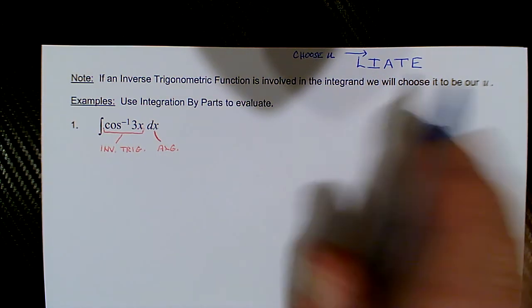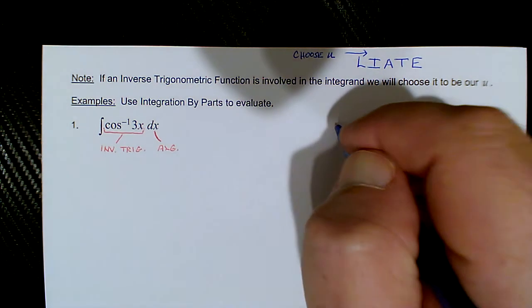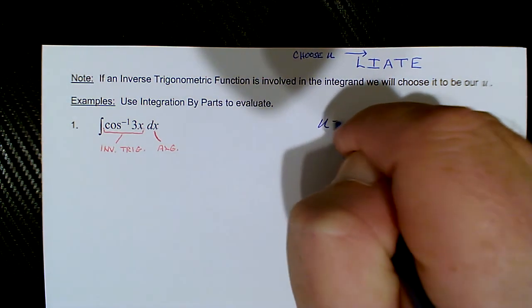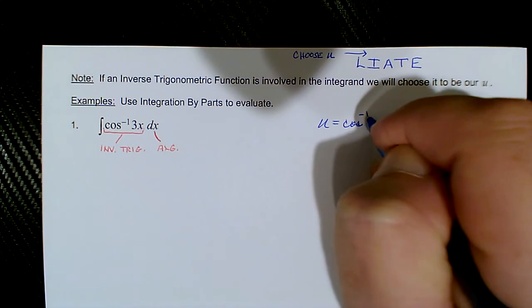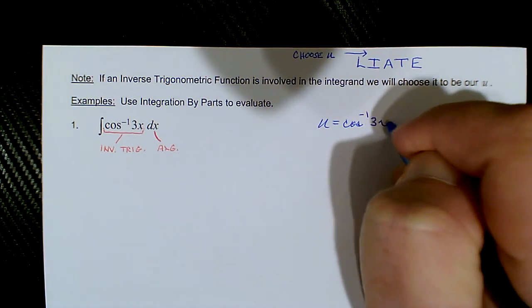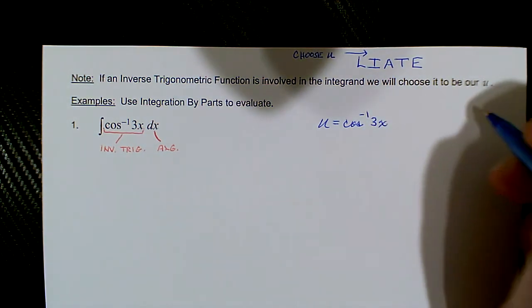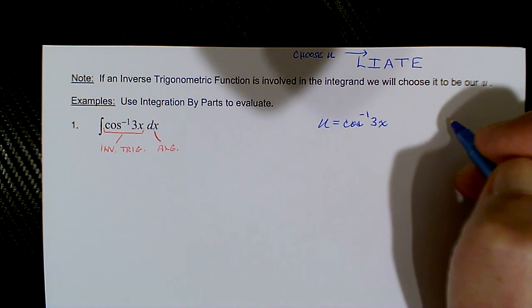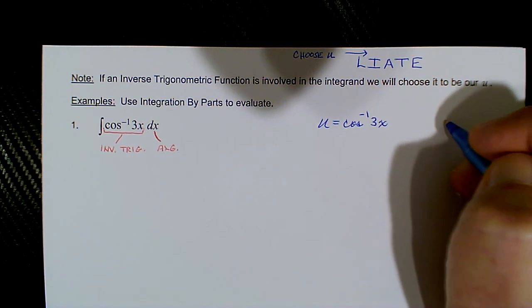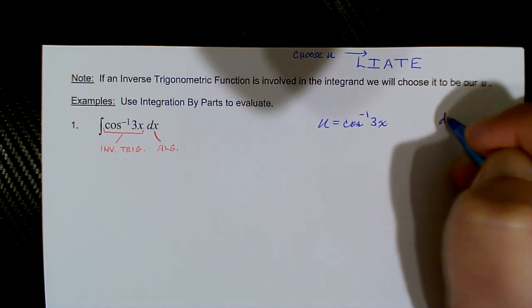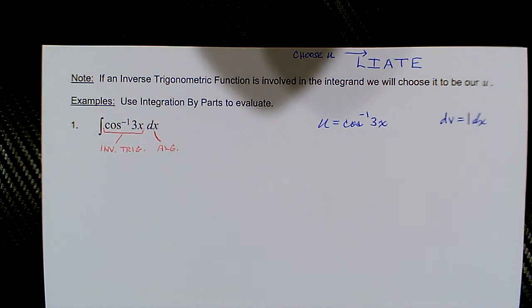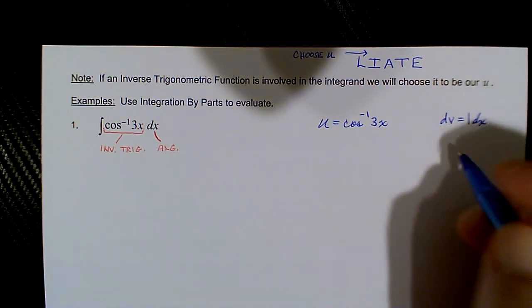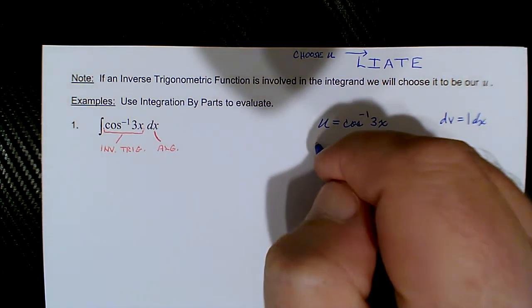So with that in mind, inverse trig precedes the algebraic, and it tells us to choose u to be the inverse trig. This is a situation where you have no choice — you must use the formal application of the integration by parts method. We're going to choose u to be inverse cosine of 3x, and our dv is going to be dx, or 1·dx if you like. At that point we calculate our du.